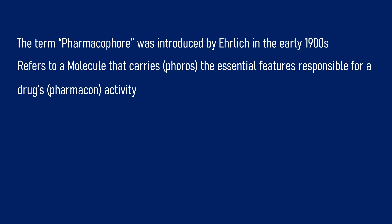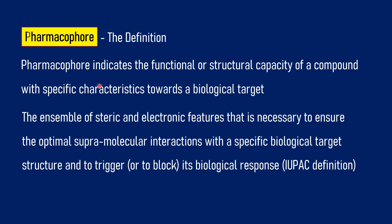The term pharmacophore was introduced by a scientist named Paul Ehrlich in the early 1900s. Pharmacophore refers to a molecule which carries — 'phoros' means the essential features responsible for a drug's activity. A drug molecule which carries the activity is known as a pharmacophore. So pharmacophore indicates the functional or structural capacity of a compound with specific characteristics towards a biological target.